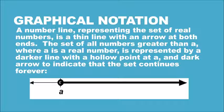Graphical notation. A number line representing the set of real numbers is a thin line with an arrow at both ends. The set of all numbers greater than a, where a is a real number, is represented by a darker line with a hollow point at a and dark arrow to indicate that the set continues forever.